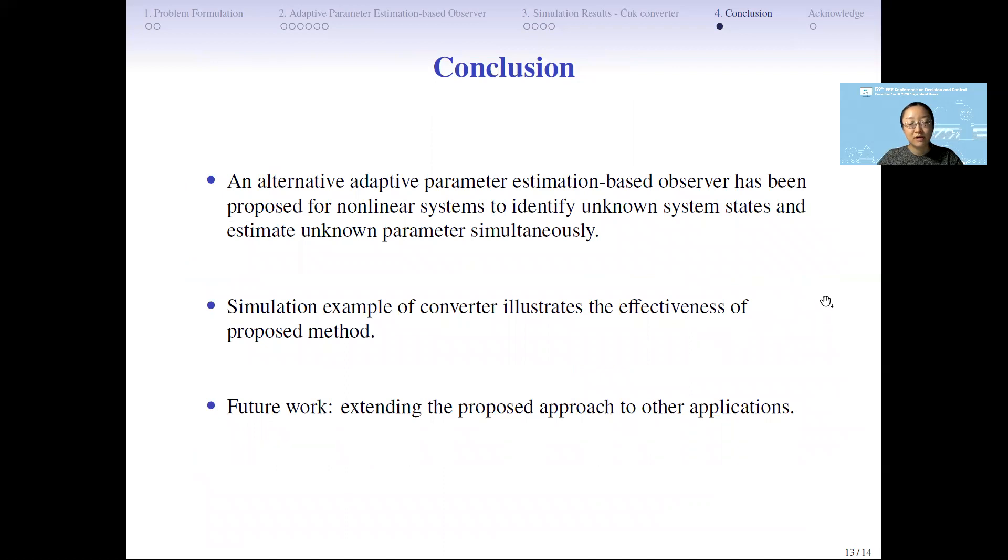To summarize, this paper proposes an alternative adaptive parameter estimation-based observer to simultaneously recover the unknown state and estimate the unknown constant parameter. Also, this proposed observer is validated through the KOOG converter. The future work will plan to extend the proposed method to other applications.